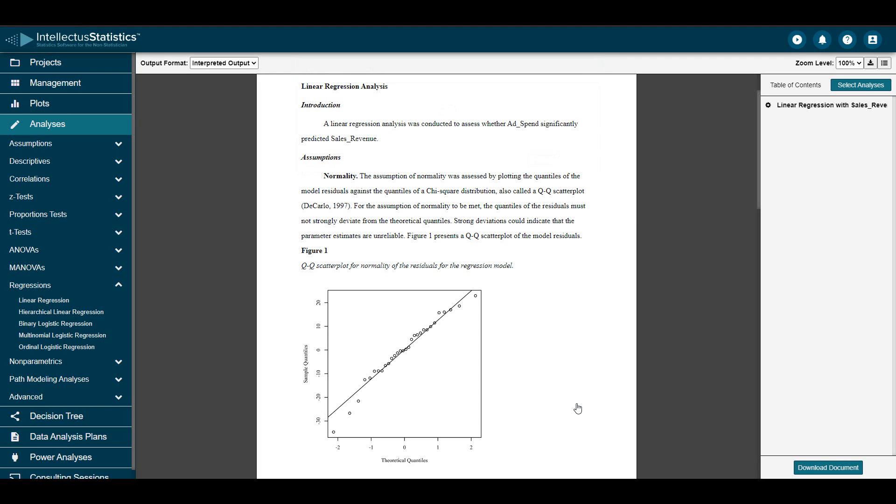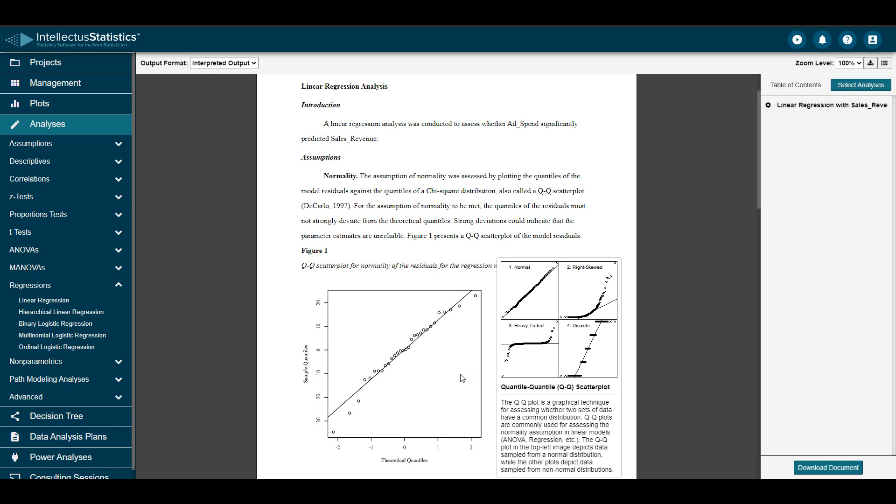Let's review the output, beginning with the assumptions. The first assumption is normality. This is examined with a QQ scatter plot. We're looking for any points with large deviations from the line. In this case, the deviations are small and roughly follow the line, so we can say that the normality assumption appears to be met. Hovering over the plot will reveal a useful tooltip with a few examples of how normal and non-normal data will look.